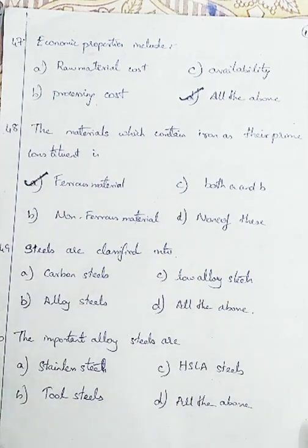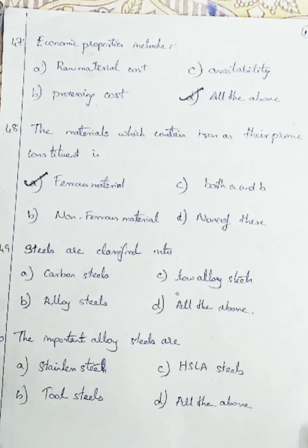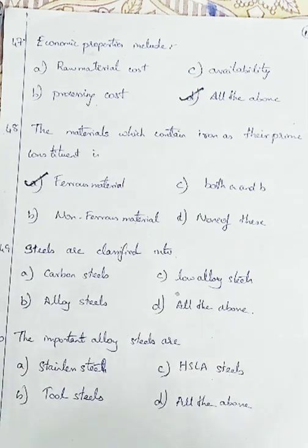Question number 49: steels are classified as — Option A: carbon steels, Option B: alloy steels, Option C: low alloy steels, Option D: all the above. Steels are classified as carbon steels and alloy steels, and carbon steels are also called low alloy steels. So we are going with Option D, all the above.